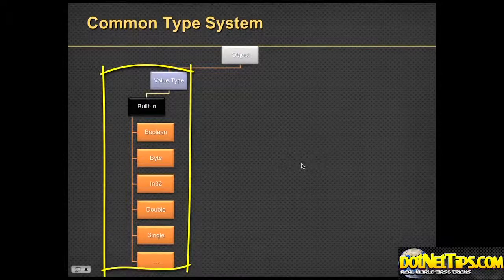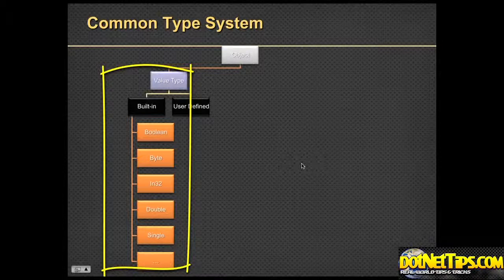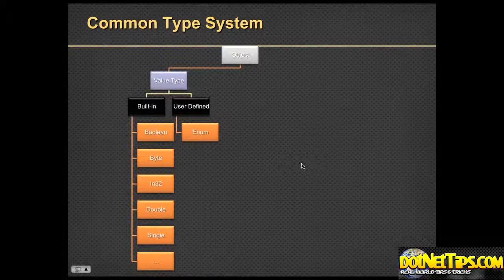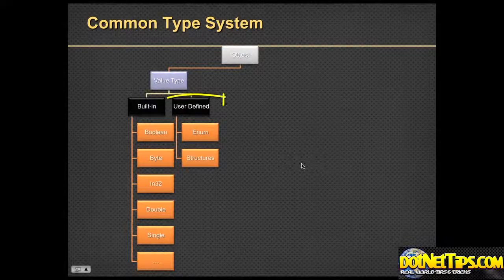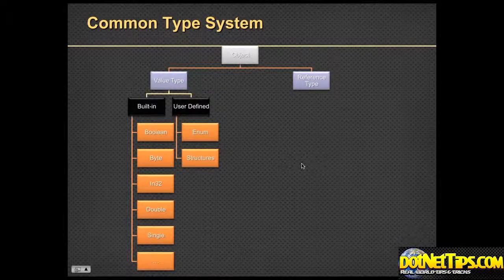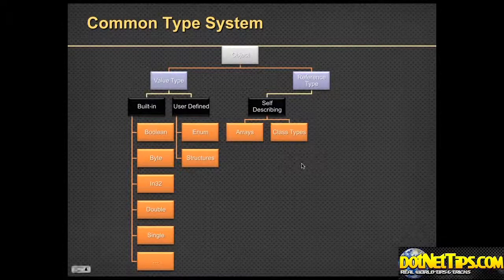There are a couple of special things with value types. You can actually create your own value types because .NET is very extensible. These are what we call user-defined types. One of the user-defined types is an enumeration, which is basically just a specialized integer where you define what numbers are in the enumeration. Structures are a way to create your own value types. Everything else is a reference type. Part of reference types are what we call self-describing types, which include arrays, your own classes, and user-defined classes.